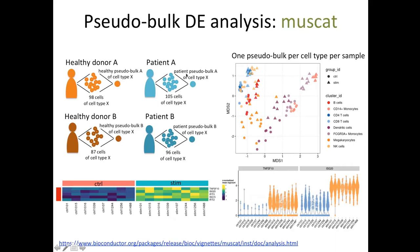We do the same for healthy donor B, where we found 87 cells of cell type X, giving one replicate. So now we have two independent replicates for each condition. If you have several cell types, you obtain one pseudo-bulk per patient, per cell type, per condition. For example, FCGR3A monocytes were aggregated across several donors — for the stimulated condition we had eight donors, and the same for the control.